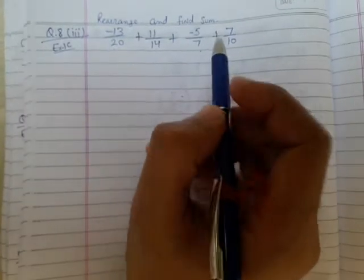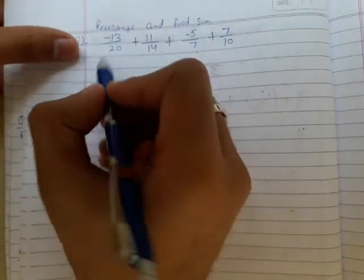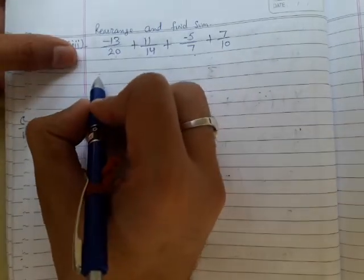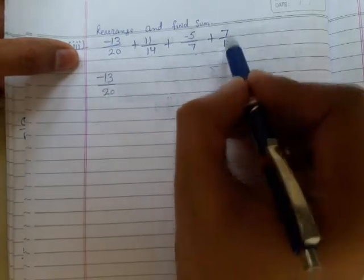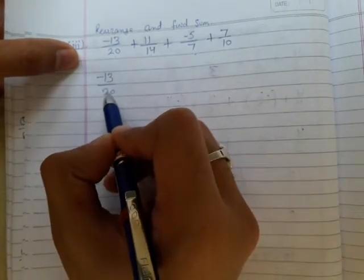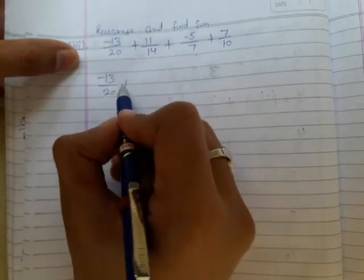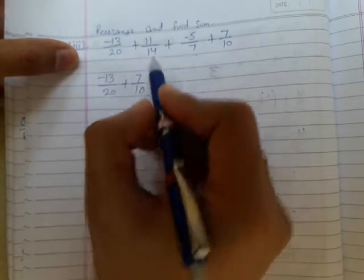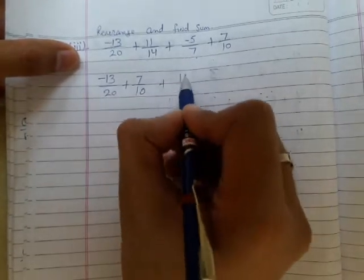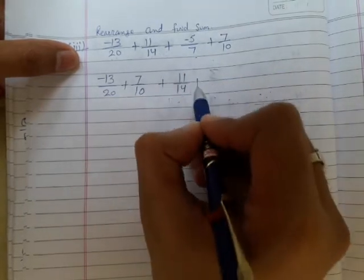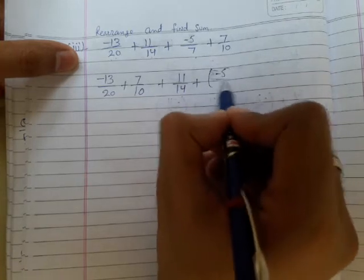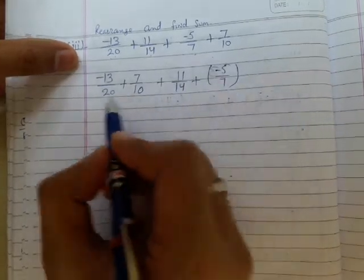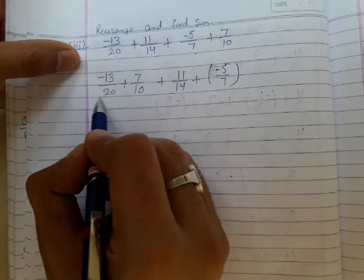First, I will write -13/20, and take 7/10 with it, so -13/20 plus 7/10. Now, 11/14 plus -5/7.